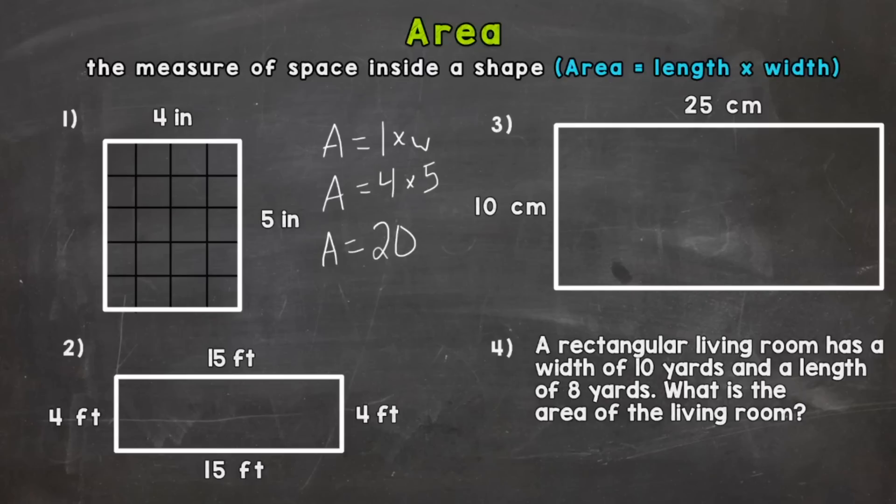Now look back at the original problem to see which unit of measure we used and it was inches. So we have 20 inches and we put a little two up here for area and that tells us that the rectangle has an area of 20 square inches.